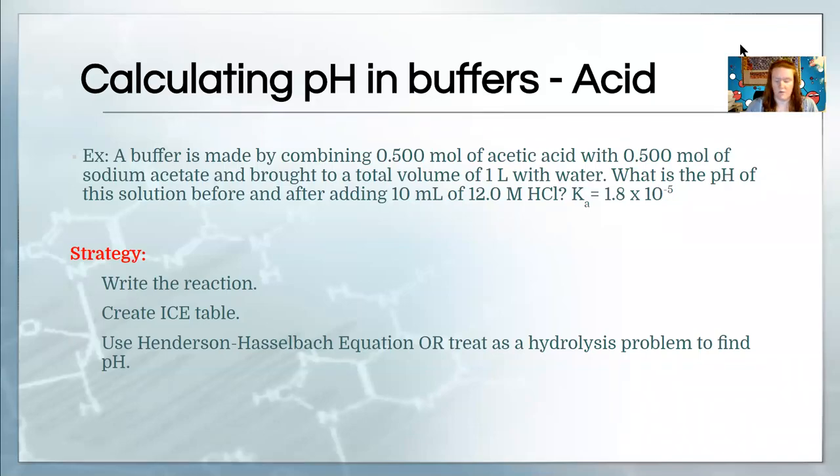So to finish the problem, what we're going to do is make an ICE table with that same reaction. So it's still acetic acid. And of course our initial amounts are 0.50 moles of each parent and the conjugate.